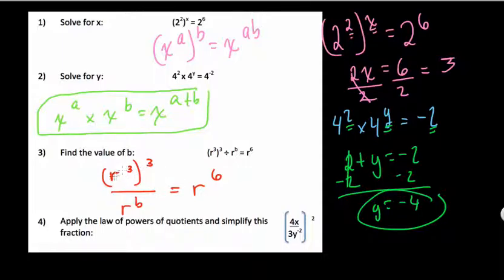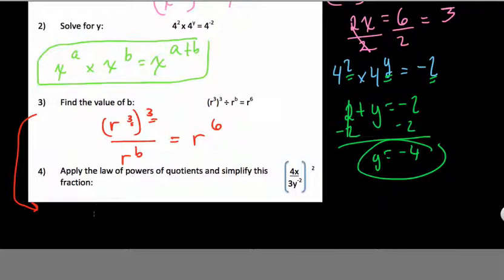Well, here we have r to the 3 to the third. So if we have r to the third, and we then cube that, what do we have? Well, we multiply these two, and it gives us a new format to work with.